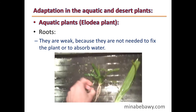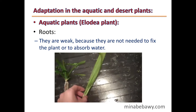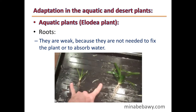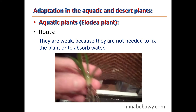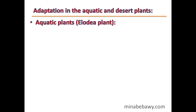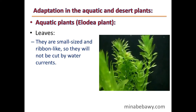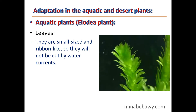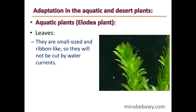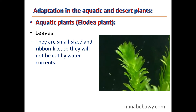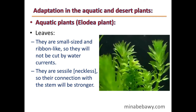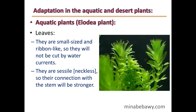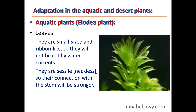The roots of the Elodea plant are weak because they are not needed to fix the plant or to absorb water. Its leaves are small-sized and ribbon-like so they will not be cut by water currents. They are sessile, so their connection with the stem is stronger.